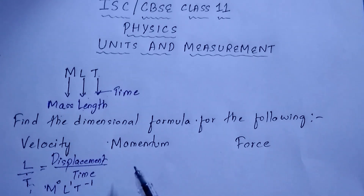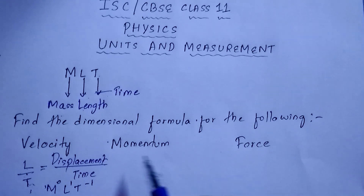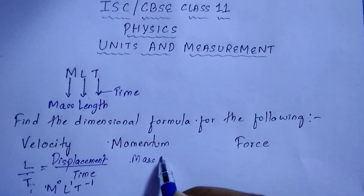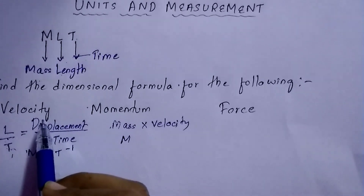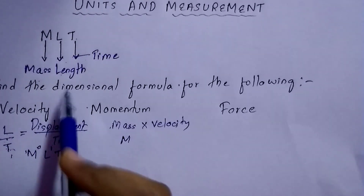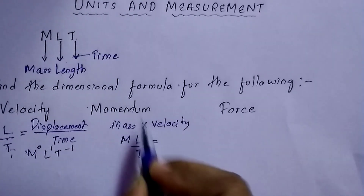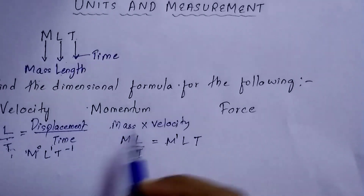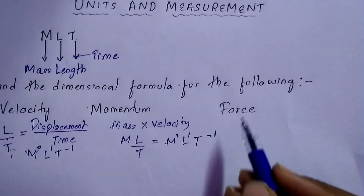Similarly, the second example is momentum. To find the dimensional formula you must know the formulas. Momentum is the product of mass and velocity: mass into velocity. Mass is M, and velocity is L/T since displacement is measured in meters (L) and time is T. So the dimensional formula for momentum is M¹L¹T⁻¹.